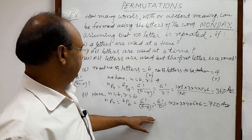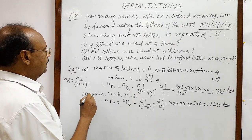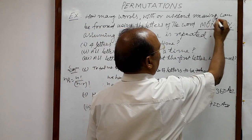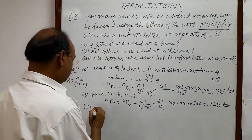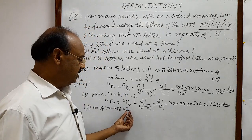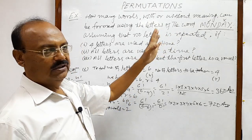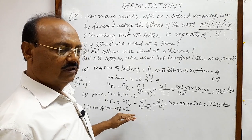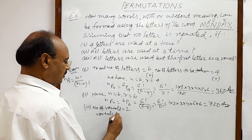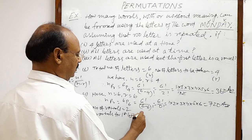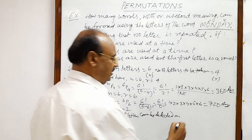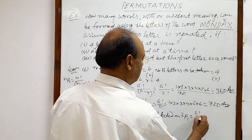Now let us see the third part: all letters are used, but the first letter must be a vowel. In MONDAY we have two vowels — O and A. We have to select any one vowel for the first position, which can be done in 2P1 = 2!/1! = 2 ways.